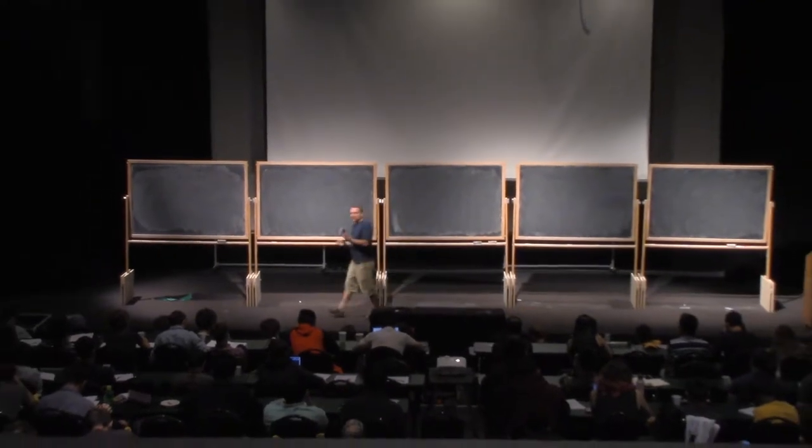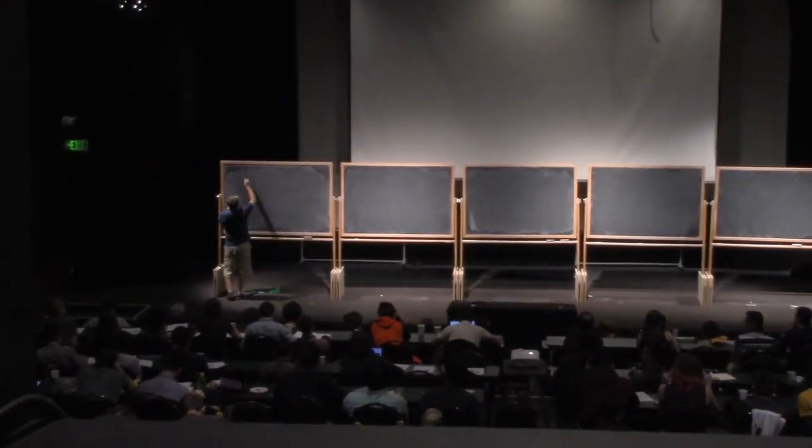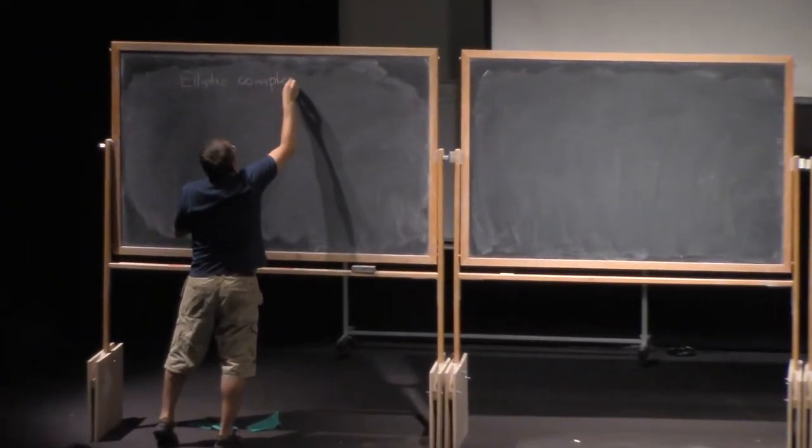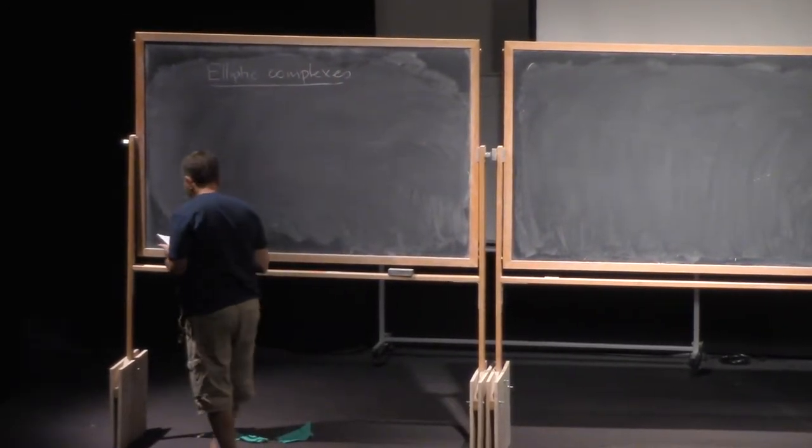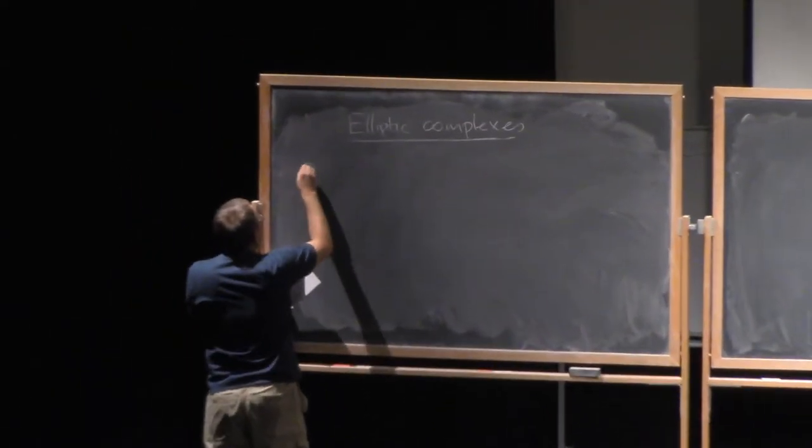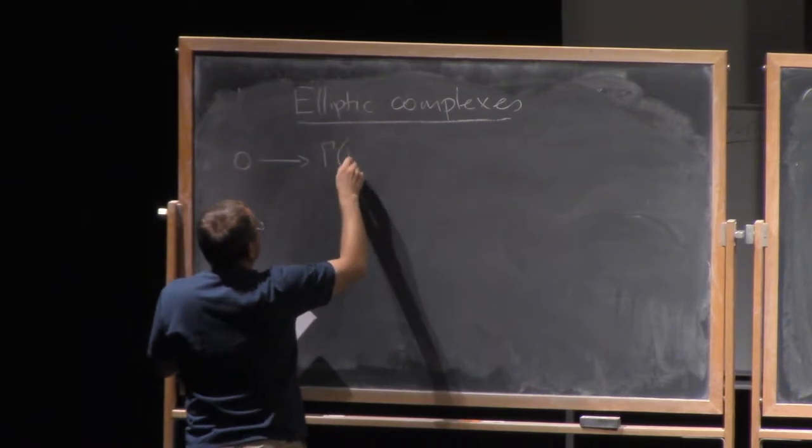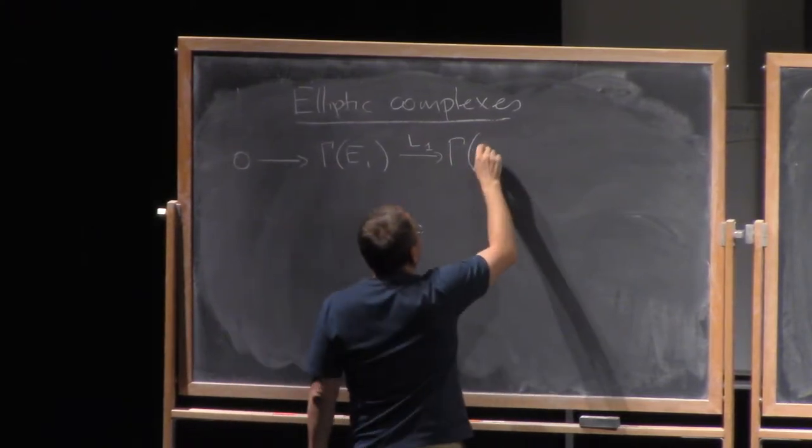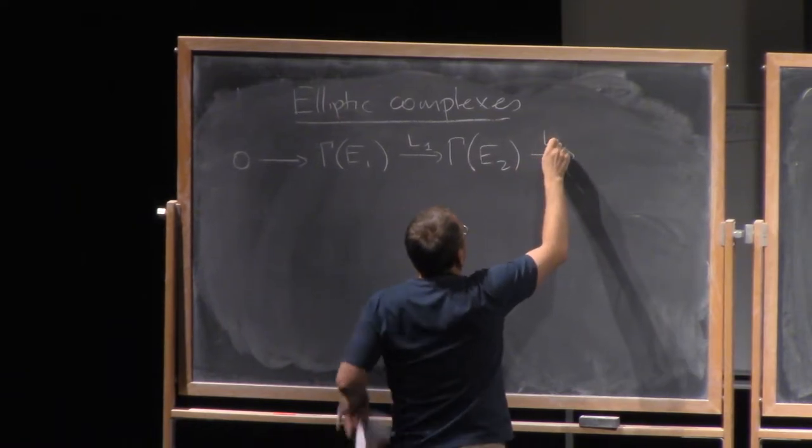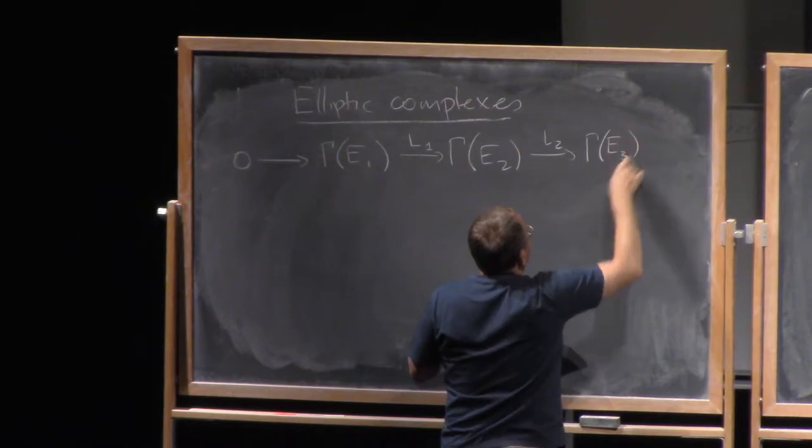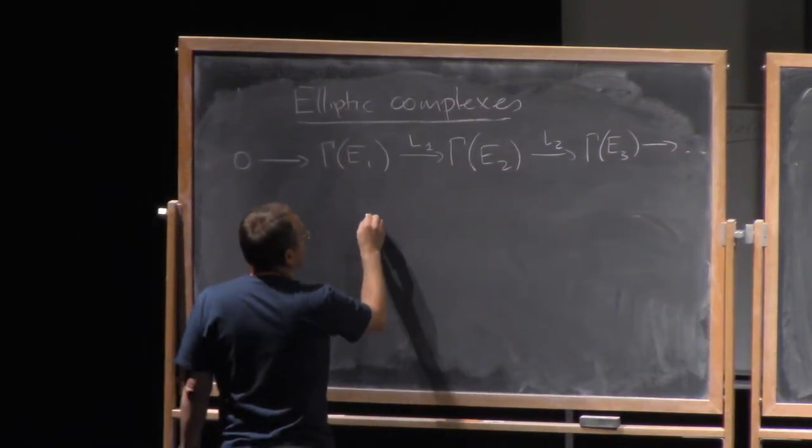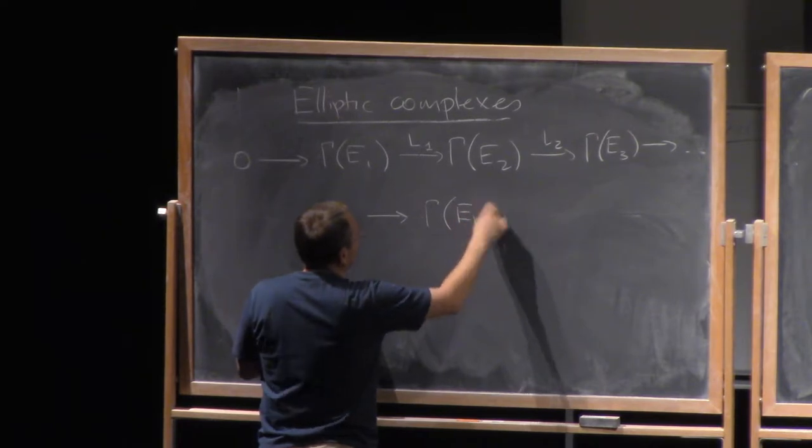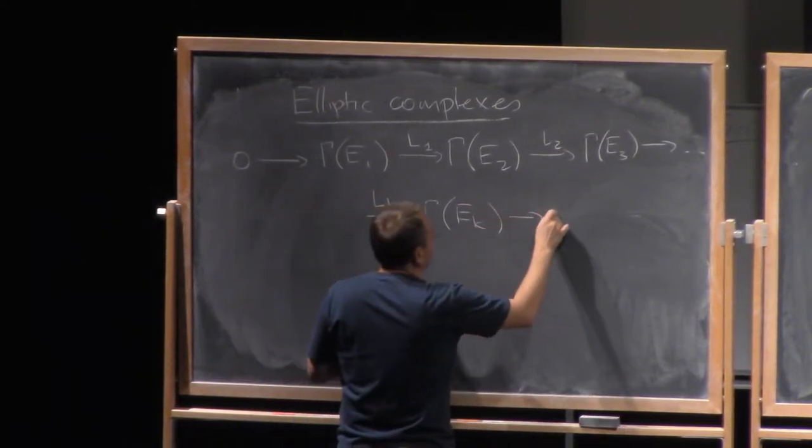So, one more useful generalization of the notions that we considered so far is the notion of an elliptic complex. What we have is a complex, that is we consider sections of some bundle E1 into maps, say map L1 from sections of E1 into sections of E2, say L2 in comma E3, and so on. And then, let me take a finite complex for simplicity, that is comma Ek. So here is Lk minus 1, then 0.